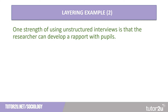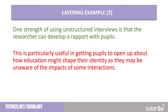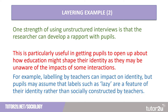Another example of a strength: one strength of using unstructured interviews is that the researcher can develop a rapport with pupils. This is particularly useful in getting pupils to open up about how education might shape their identity, as they may be unaware of the impacts of some interactions. For example, labelling by teachers can impact identity, but pupils may assume that labels such as 'lazy' are a feature of their identity rather than socially constructed by teachers. Again, we're talking about the who, the what and the how, all in one point.